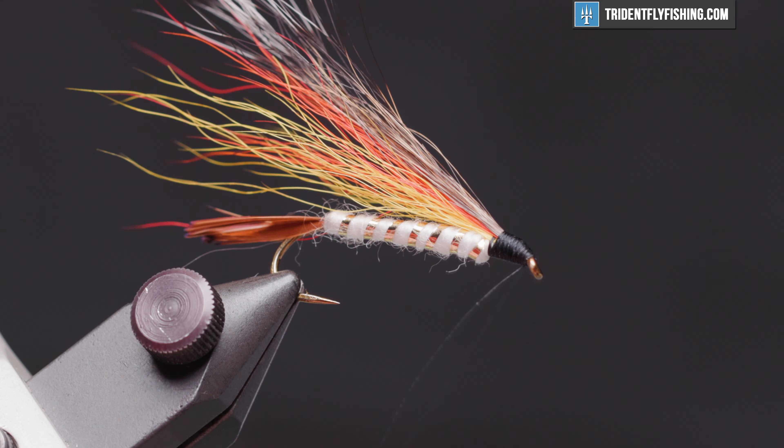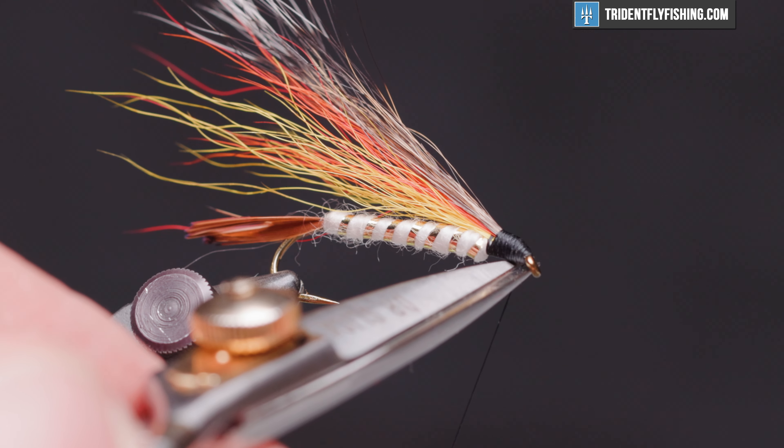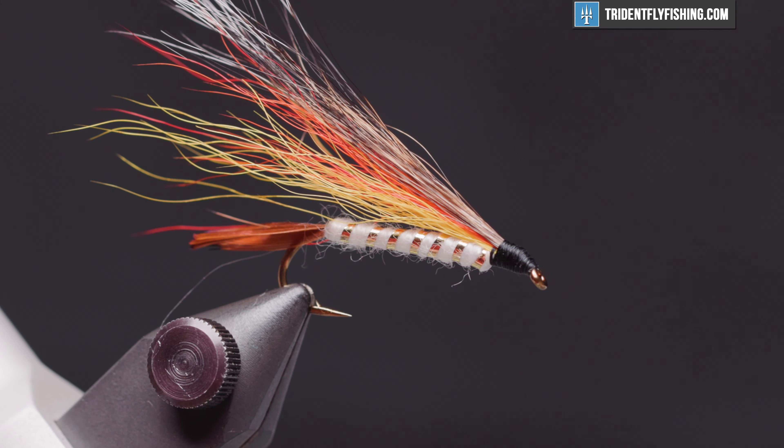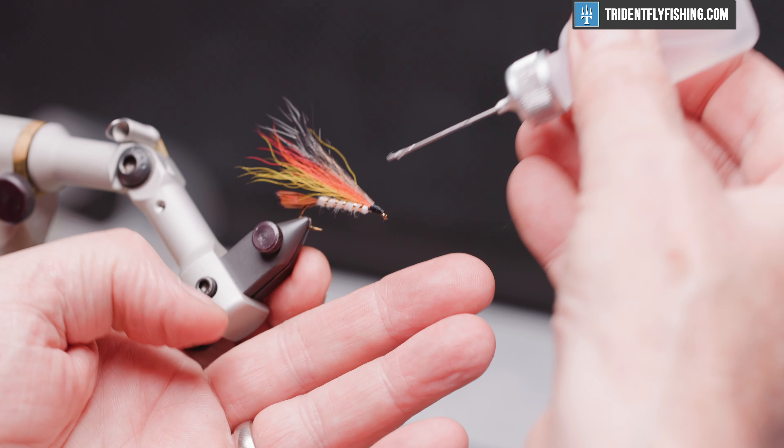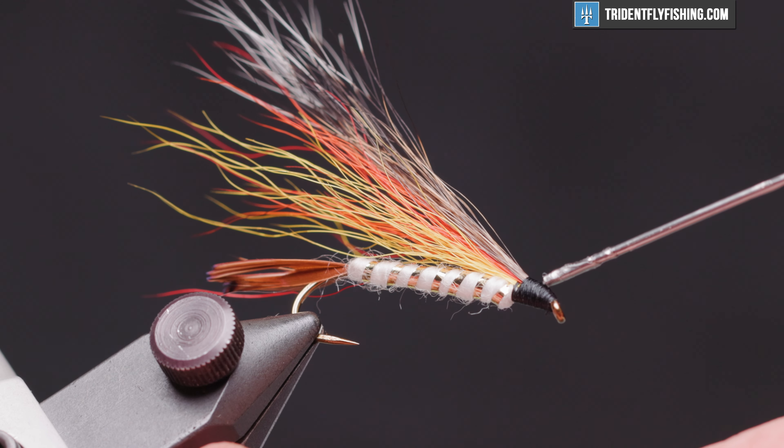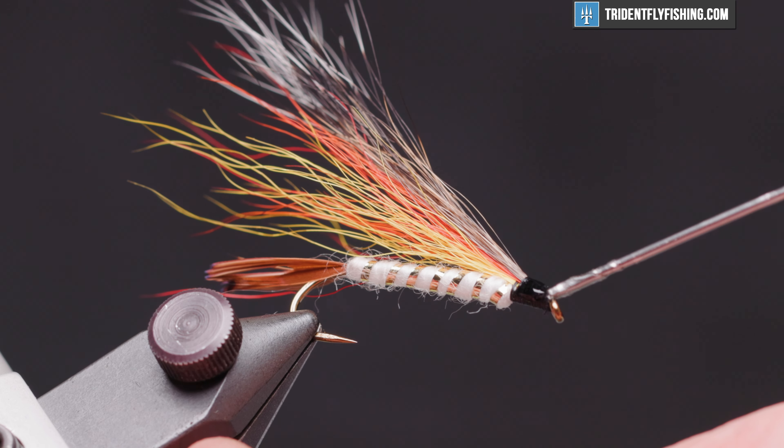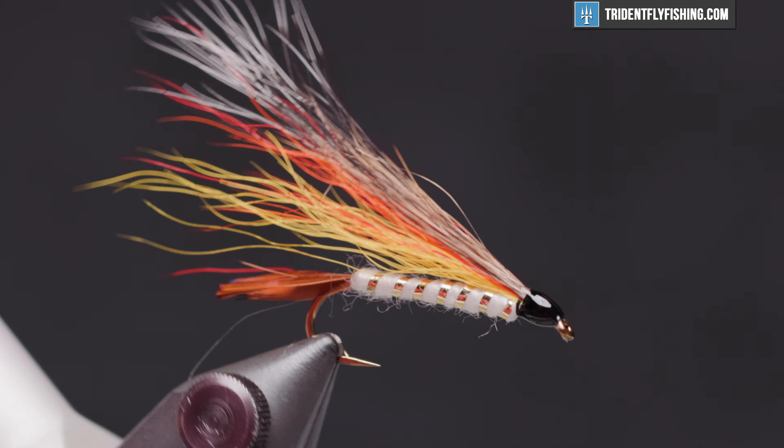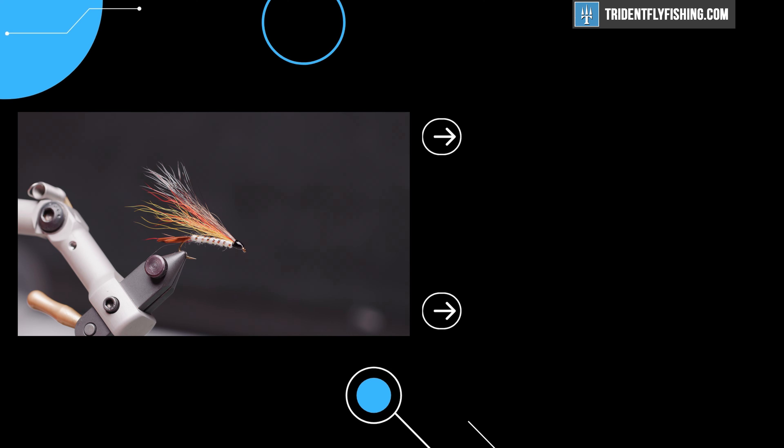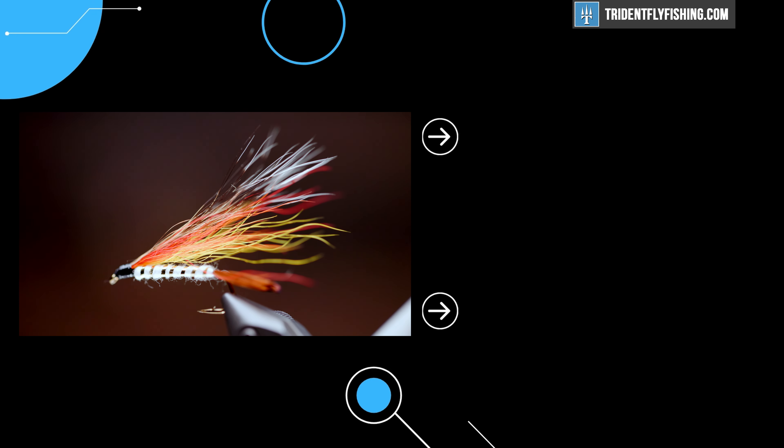Four or five turn whip finish. Seed our knot. Cut the thread. And add some head cement. And our fly is finished.